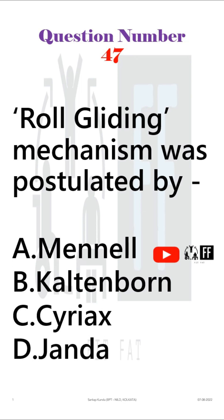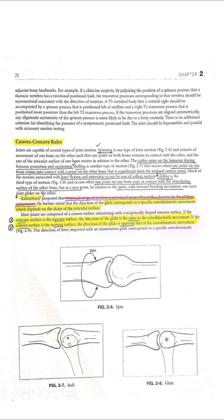This question came from the mobilization part which comes under your exercise therapy subject. Rolling and gliding are the arthrokinematic motions that happen in a joint.